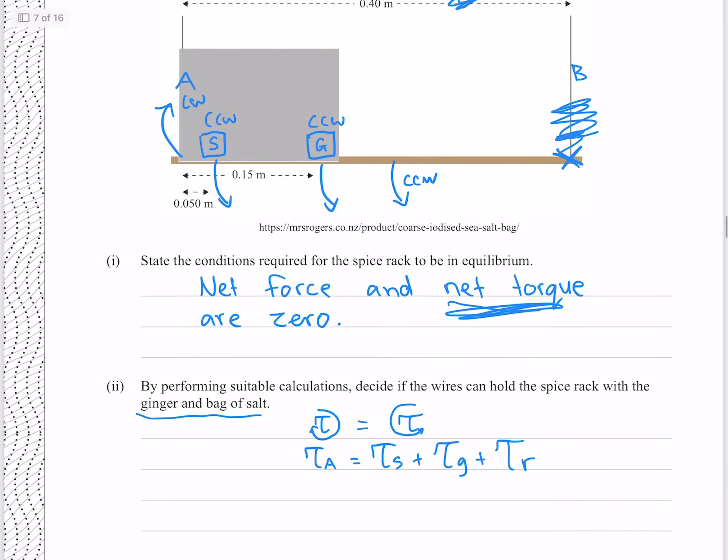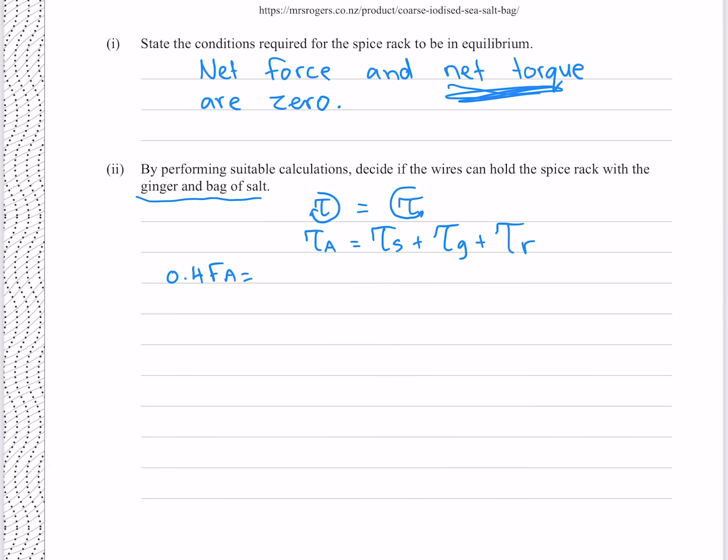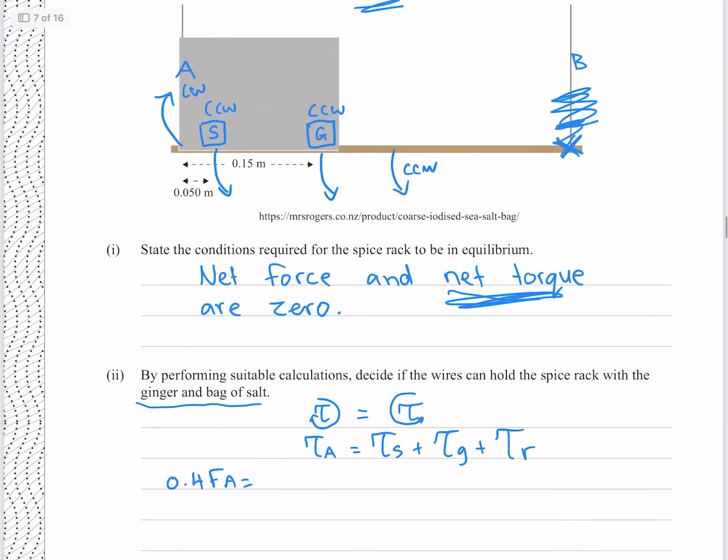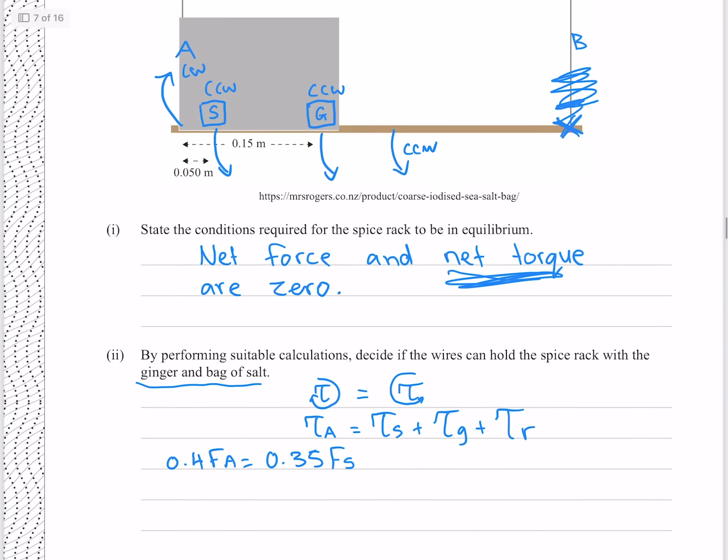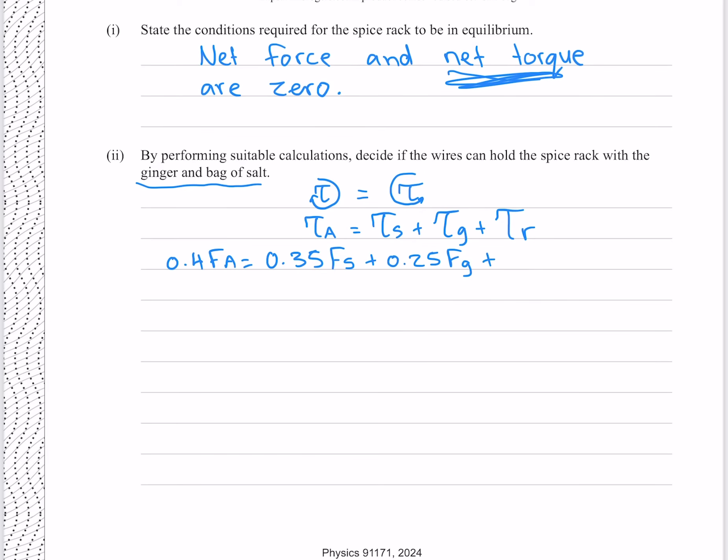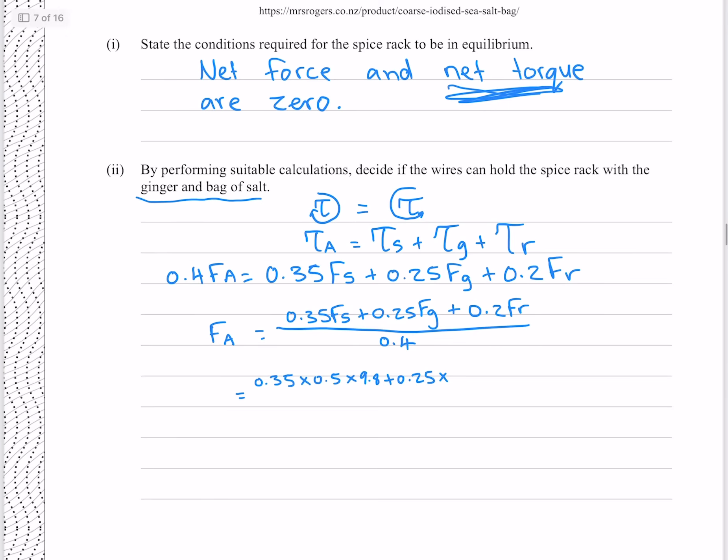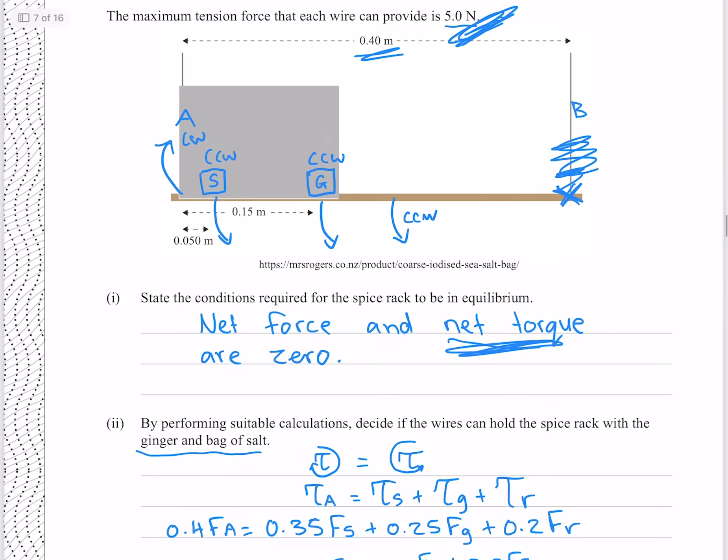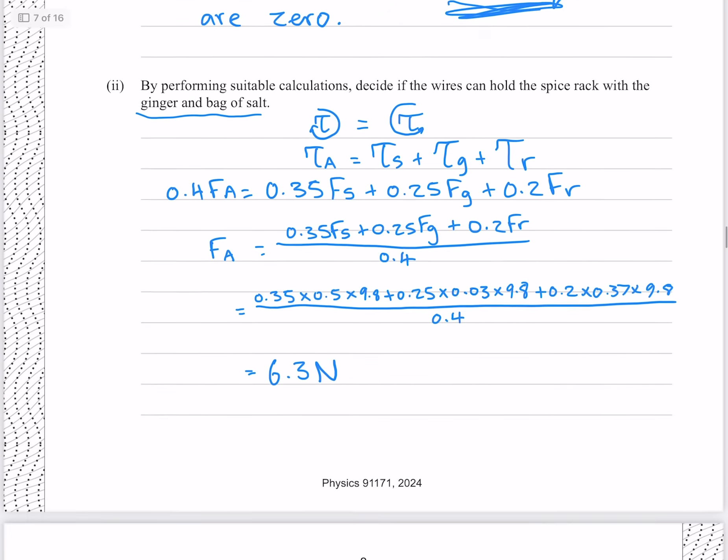Replacing those torques with their forces times their distances from the pivot, our distance to the pivot from our torque A is the full length 0.4 meters. The distance from the salt to our pivot B is 0.4 meters minus 0.05, which gives me 0.35 meters. The distance to our ginger is our full 0.4 minus 0.15, which gives me 0.25. And finally the torque from the rack is acting at half the distance, which is 0.2, solving this for FA, which is what we're trying to find, by dividing both sides by 0.4. Putting our masses and the acceleration due to gravity in for our forces, which gives me 6.3 newtons to two significant figures, which is greater than the 5 newtons our wire can provide. And so the rack will fall.